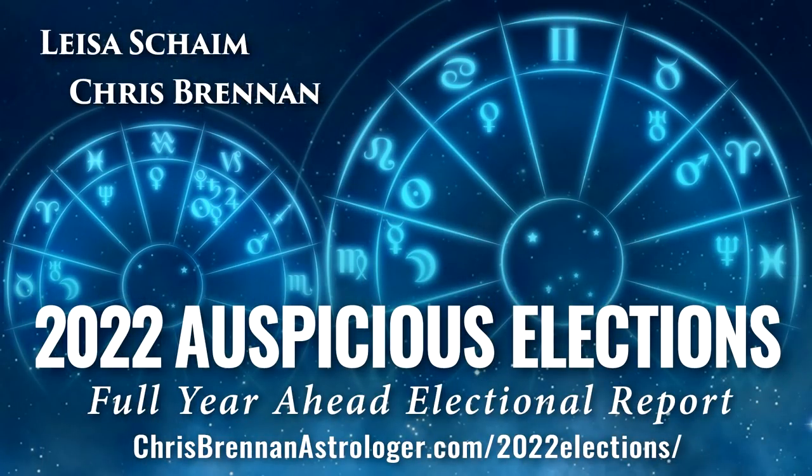Finally, I also recently released my 2022 electional astrology report where I went through the year and I picked out some of the most auspicious or lucky dates with one lucky date or electional chart for each of the next 12 months. These are useful for starting different types of ventures and undertakings using the principles of electional astrology. The report is also available at courses.theastrologyschool.com.